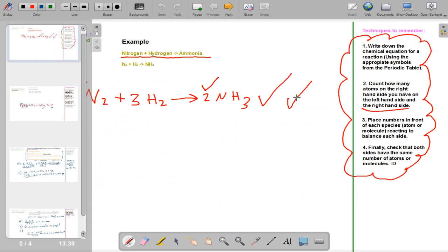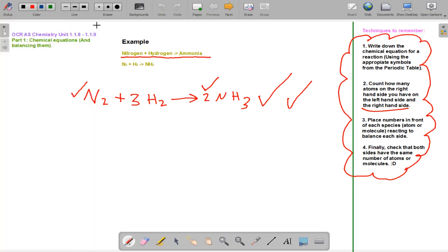Quick summary of the techniques: Write down the chemical equation for the reaction using the appropriate symbols for the periodic table. Count how many atoms on the right-hand side and left-hand side. Place numbers in front of the species, react on the bands each side, and then check that both sides have the same number of atoms and molecules. So thank you for watching.